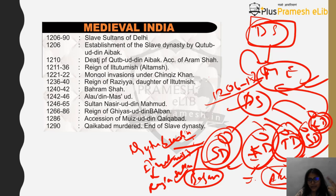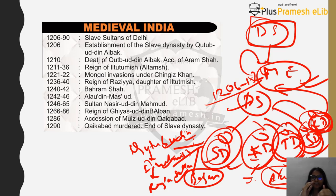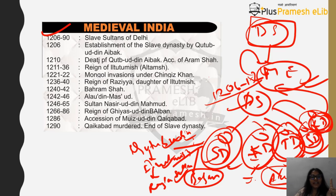After Khilji dynasty you have the Tughlaqs. In Tughlaqs you have Ghiyasuddin Tughlaq, then Firuz Tughlaq, and Mohammed bin Tughlaq. In the Sayyad dynasty you don't need to remember particular rulers as their contribution and rule were both very limited, though their contribution to art and culture is important. Then comes the last dynasty, the Lodhis, where you have Sikandar Lodi and Ibrahim Lodi. This is a short overview before we dive into events.